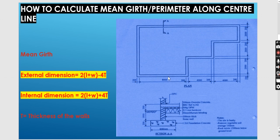So if you have this plan here, we need to find the perimeter. If you start at this point, going this way, that way, that way, up, going back to this point — we need to find the perimeter. When you are talking about perimeter, it's like you are unfolding this plan for you to be able to get the perimeter along the center line.